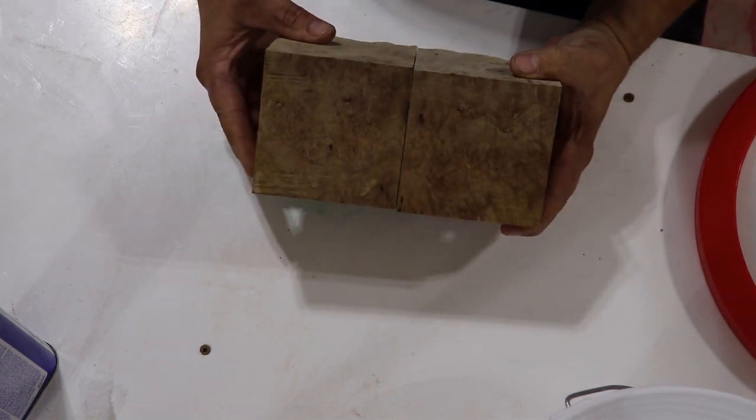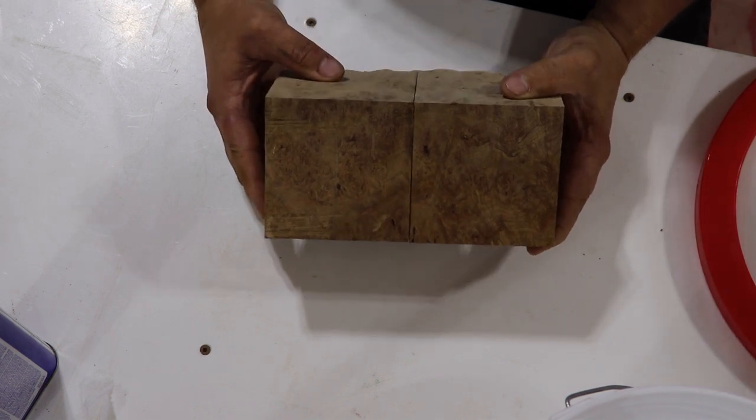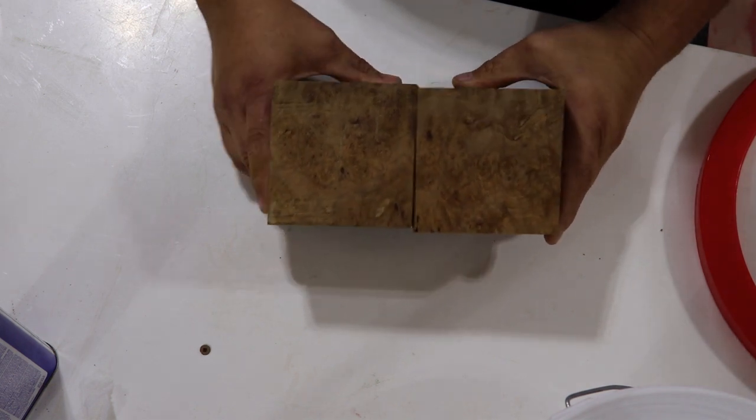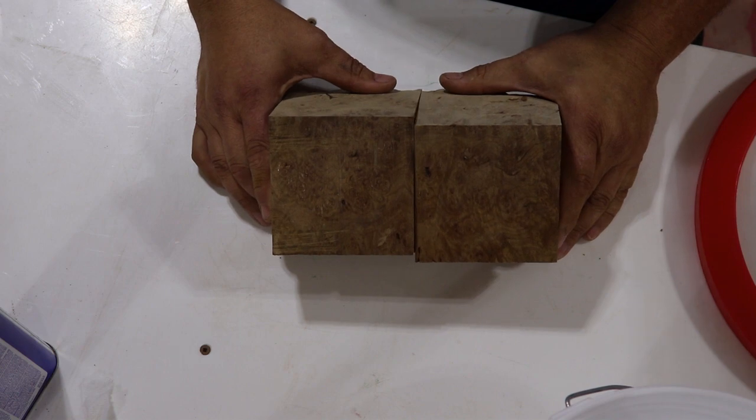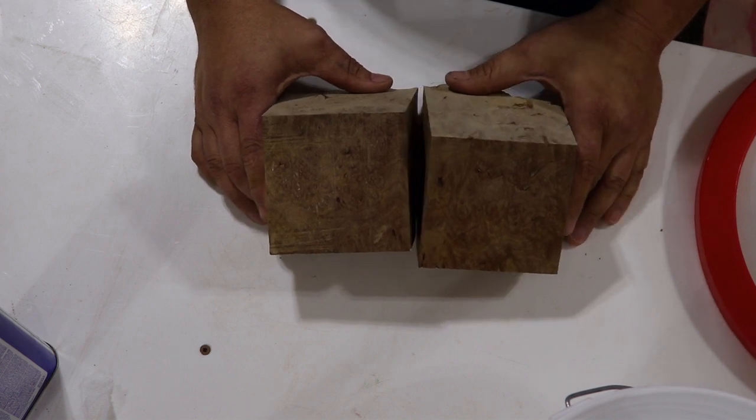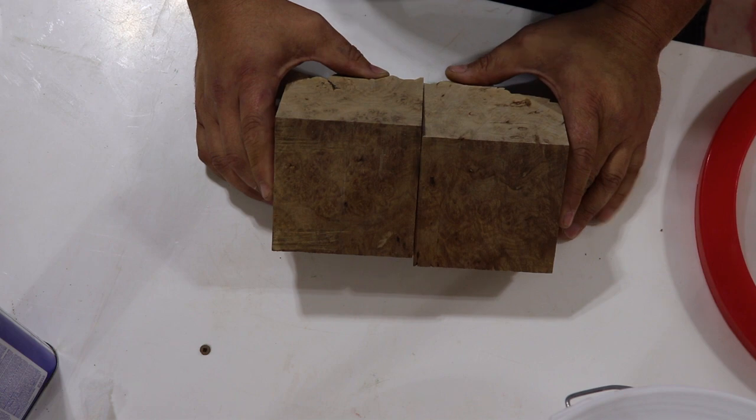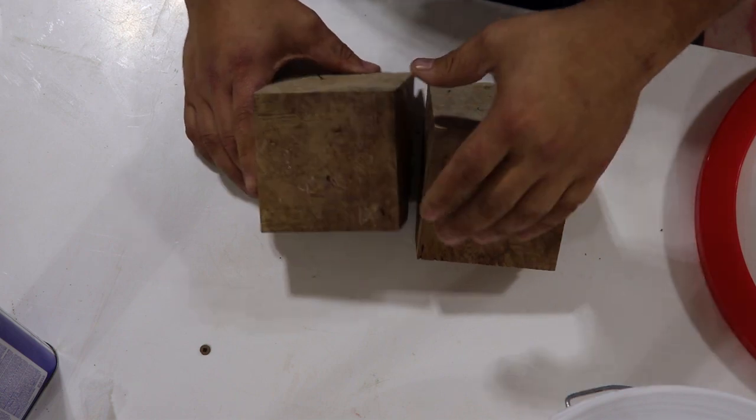Out of the oven, they're 100% dry, zero moisture content right now, and what I'm going to do is cast them or stabilize them in cactus juice resin.